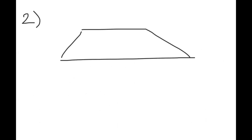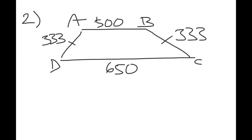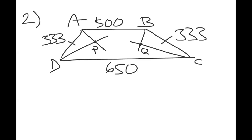Let's go on to number two. We have an isosceles trapezoid where AB = 500, CD = 650, and the two legs are 333. The angle bisectors of the two base angles at AB meet at P, and the angle bisectors of the two base angles at CD meet at Q. We want to find the length of PQ.